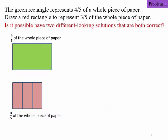This is another challenge. Is it possible to have two different looking solutions that are both correct? We already have one solution, right? So how can we have a different solution?